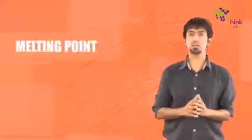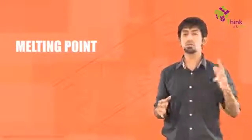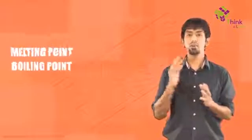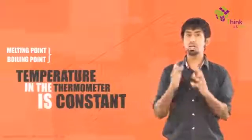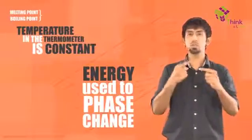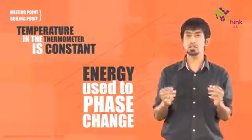So, there are two very, very special points here. One of them is the point where it melts called the melting point and the other point where it boils, where water boils called the boiling point. And in both these times, the temperature in the thermometer is constant because at that point, the energy is spent to convert the state or a phase change rather than a temperature change.